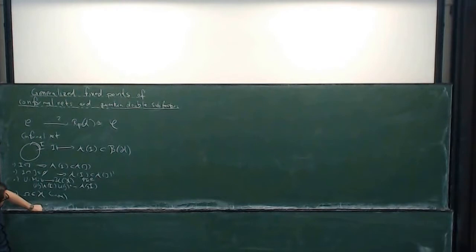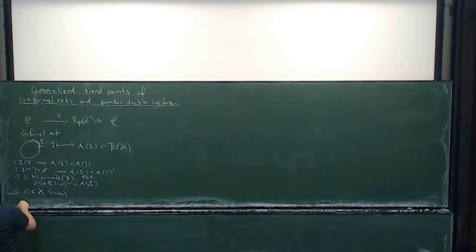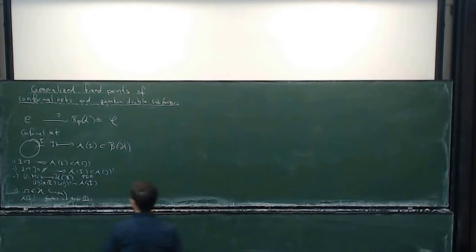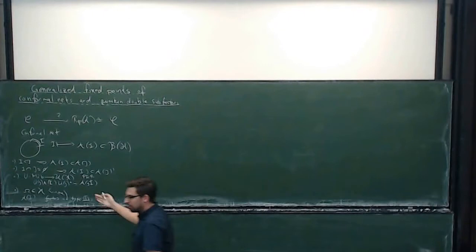One of the implications is that we have this vacuum vector, which is cyclic and separating for every A(I), and the algebras are all type III₁. And naturally we expect also to get subfactors.